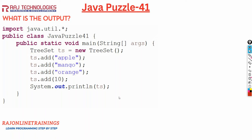Welcome to Raj Online Trainings. In this series of Java puzzles, let us go with one more new puzzle. In this video we have taken a class JavaPuzzle41. In the main method, we are creating an object of TreeSet: TreeSet ts equal to new TreeSet.